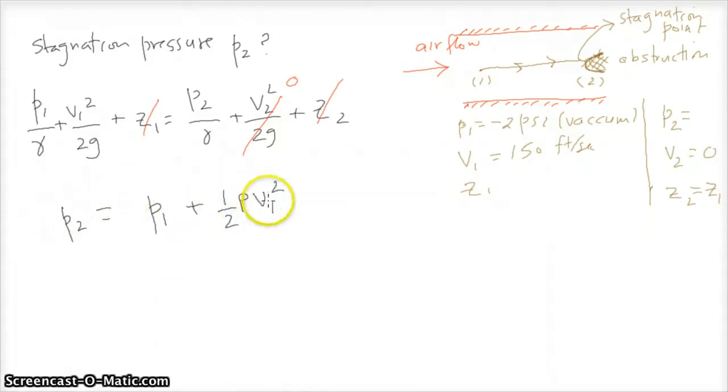Now this is also the relationship that can be used to compute stagnation pressure. Basically, it's telling us that it's the static pressure plus whatever was the dynamic pressure, it got converted into the static pressure at the second point where the fluid came to rest.